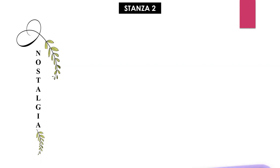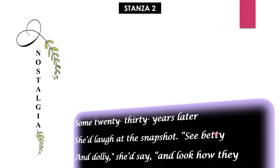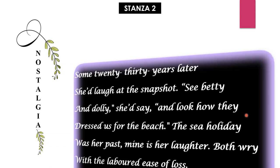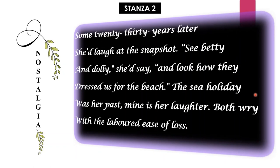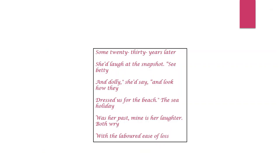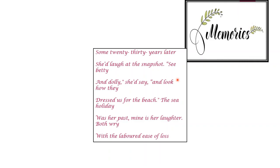Now let us look at the second stanza: 'Some twenty or thirty years later she would laugh at the snapshot — see Betty and Dolly, she would say, and look how they dressed us for the beach. The sea holiday was a past mine is a laughter, both thrive with the labored ease of loss.' The tone of this stanza is both happiness and sadness. After about twenty to thirty years, the poet's mother would look at the photograph and laugh nostalgically, remembering happy memories. She would comment on the dresses worn by her cousins Betty and Dolly, amused to see how she looked as a youngster.